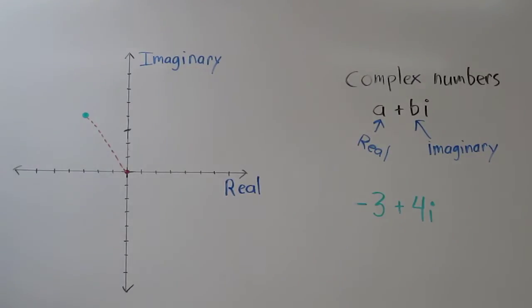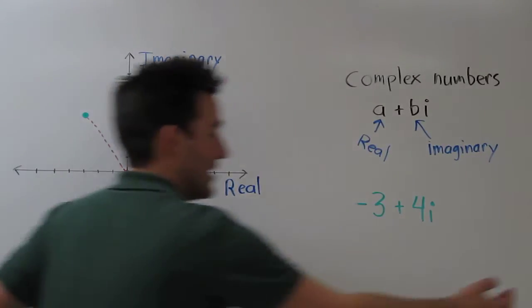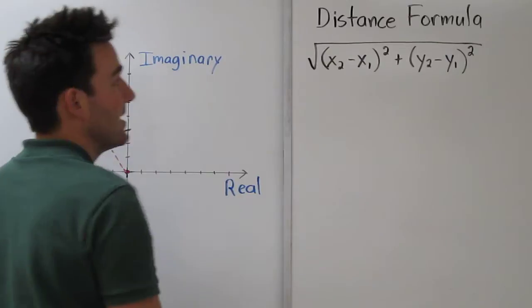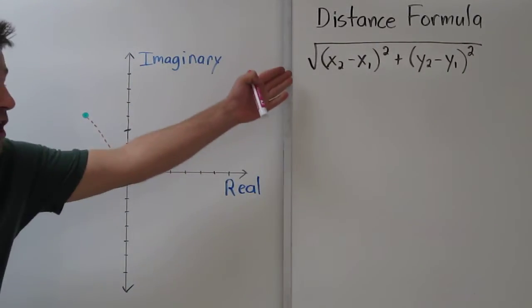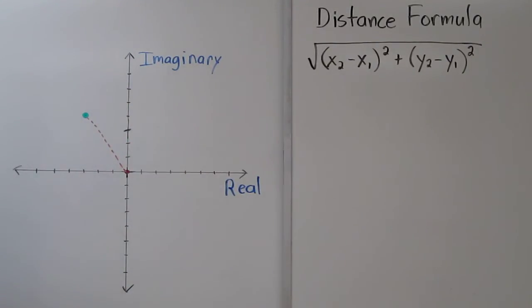What we can use now is the distance formula. The distance formula, you may recall, looks like this, where we plug in the x-coordinates of the two points and the y-coordinates of the two points we're trying to find the distance between.